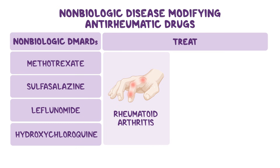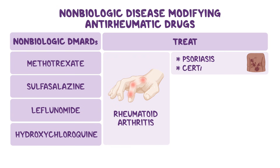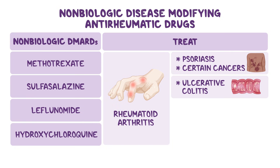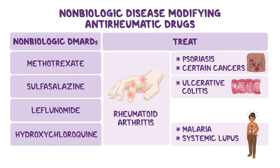In addition to rheumatoid arthritis, most of these medications have other indications. Methotrexate can be used to treat psoriasis and certain cancers. Sulfasalazine is also indicated for ulcerative colitis. Finally, hydroxychloroquine can be used to treat malaria and systemic lupus erythematosus.